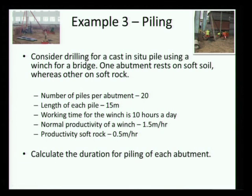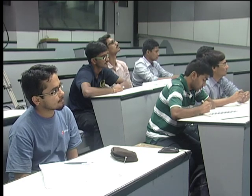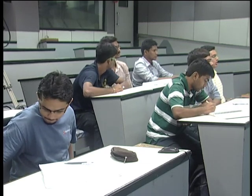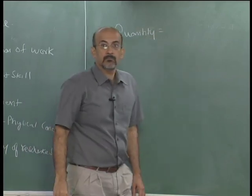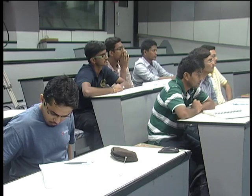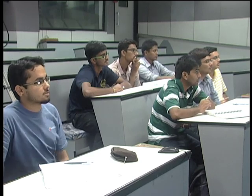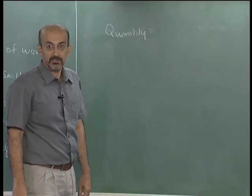Straightforward — why don't you just do the calculation? So, what is our quantity? The productivity is given in meters per hour, which means meters per hour of pile length. So it makes sense to put my quantities in meters, which means the total quantity is 20 piles into 15 meters per pile.